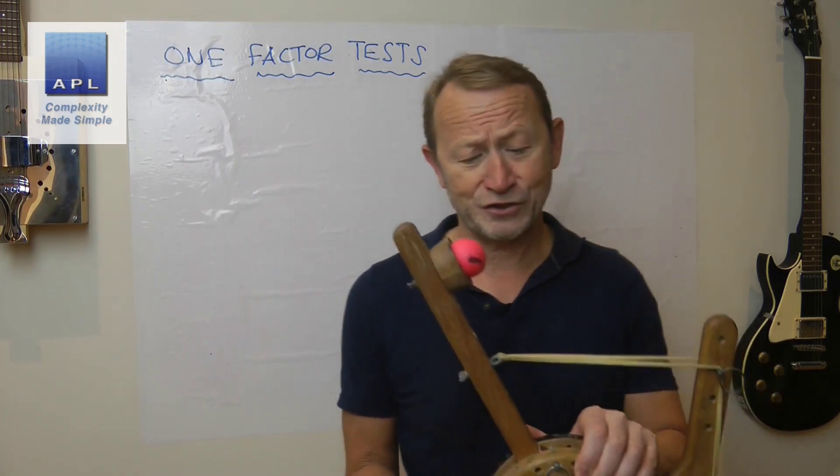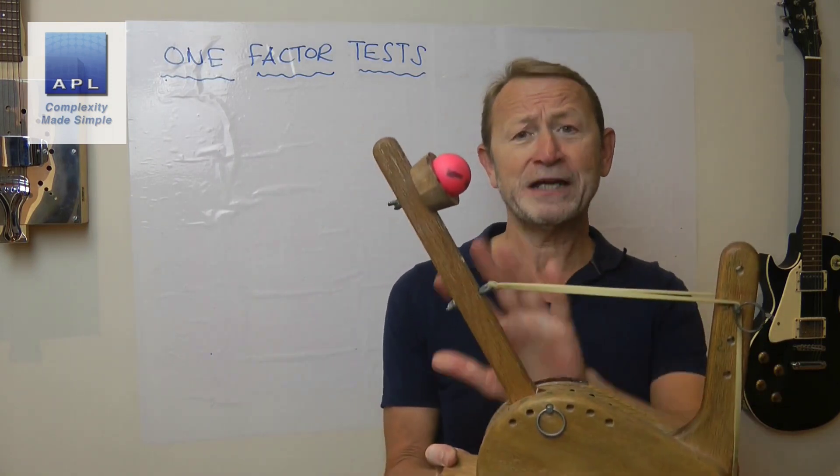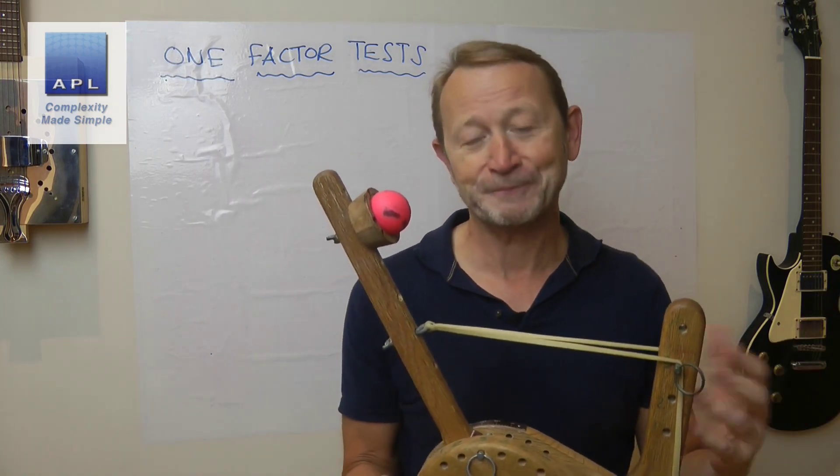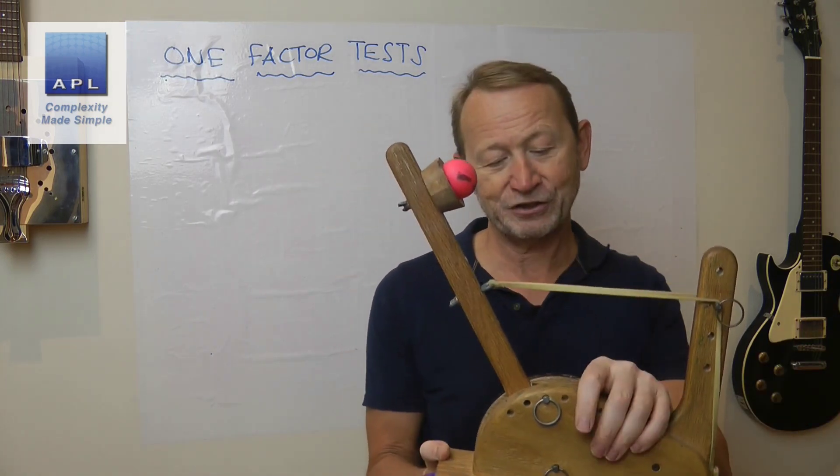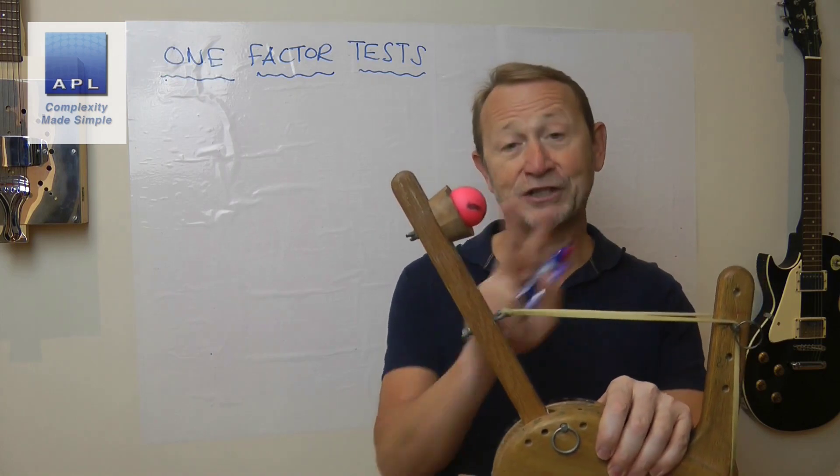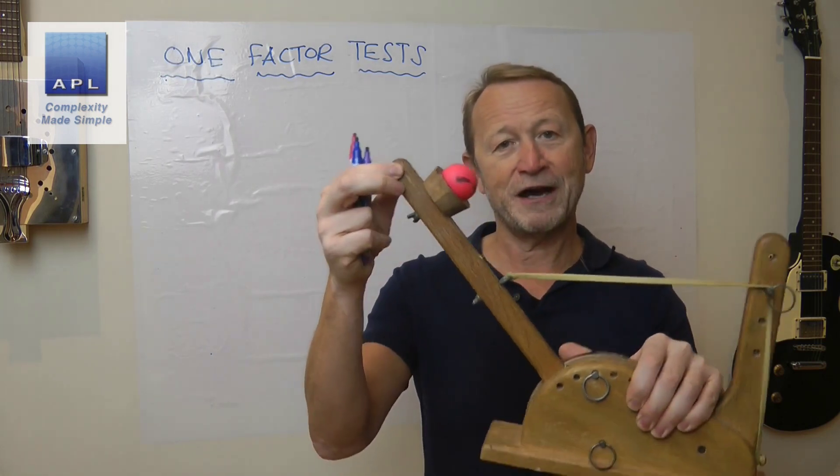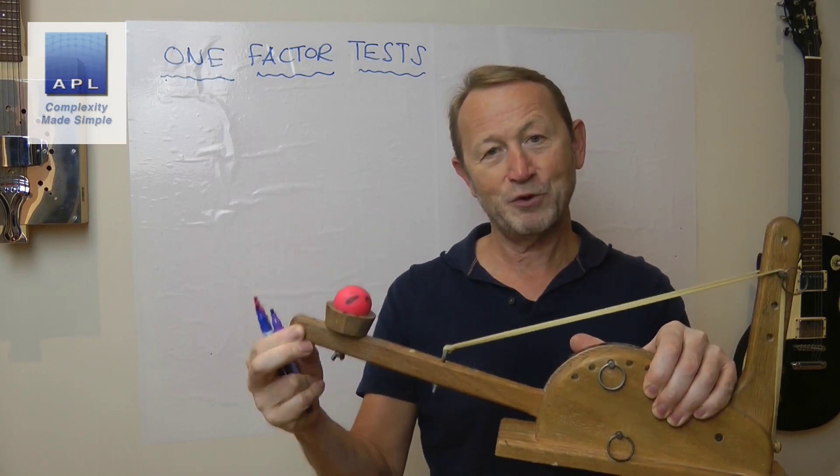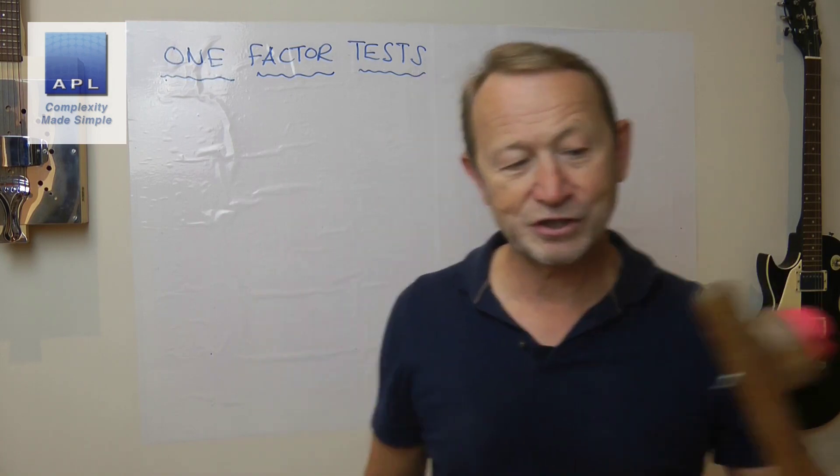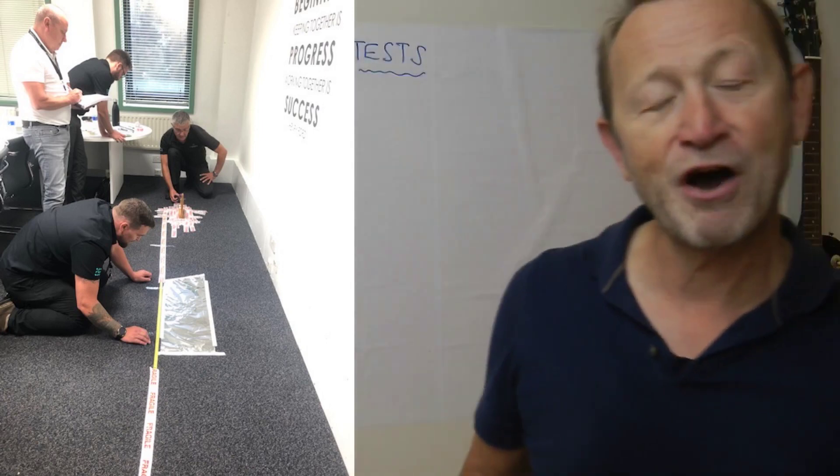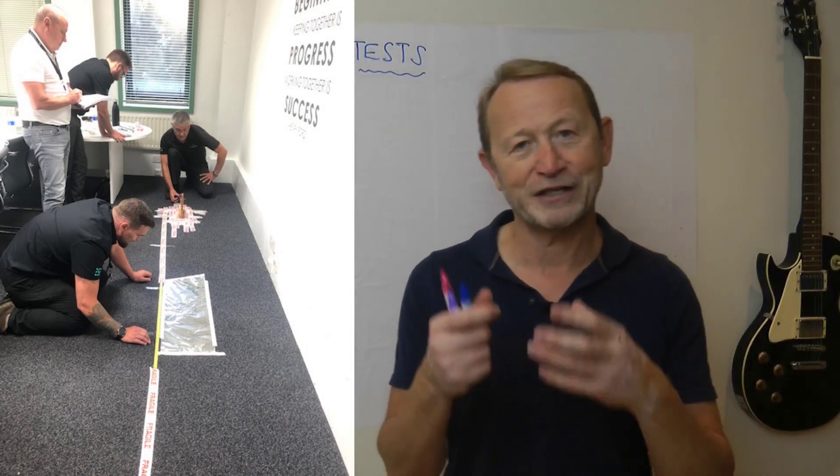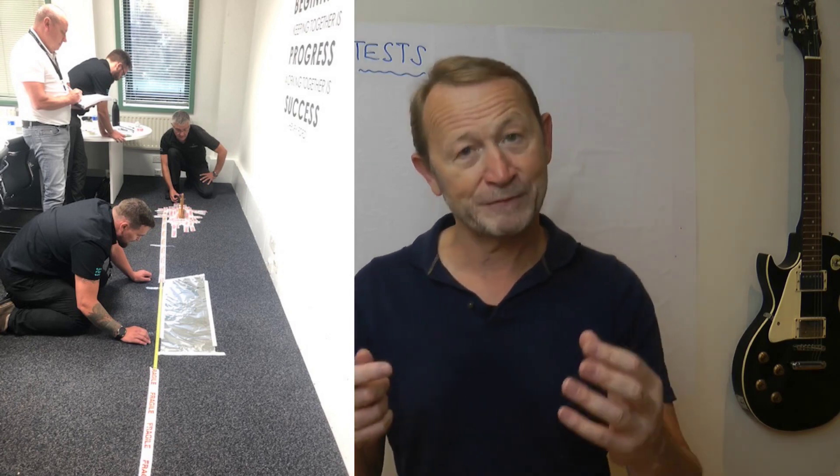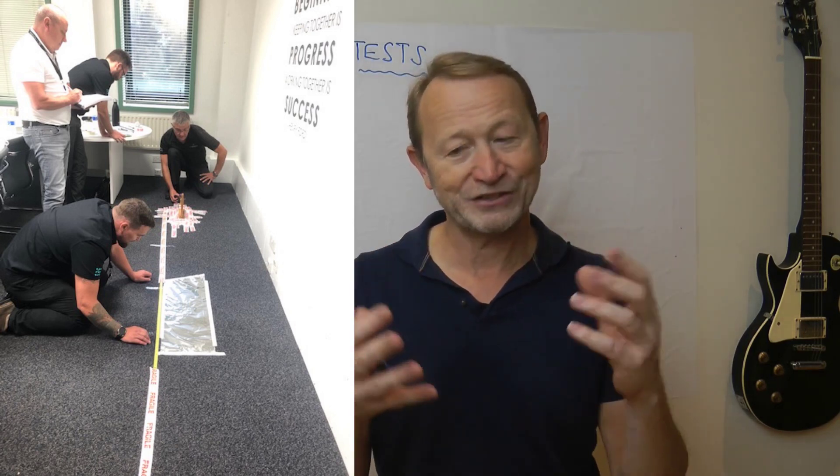Now, one-factor tests: what you're taught to do is keep everything constant and just move one thing at a time. In my classes, I get the class to keep everything constant and then fire at several different pullback angles. You can see a class here going through the data collection phase of that particular process.